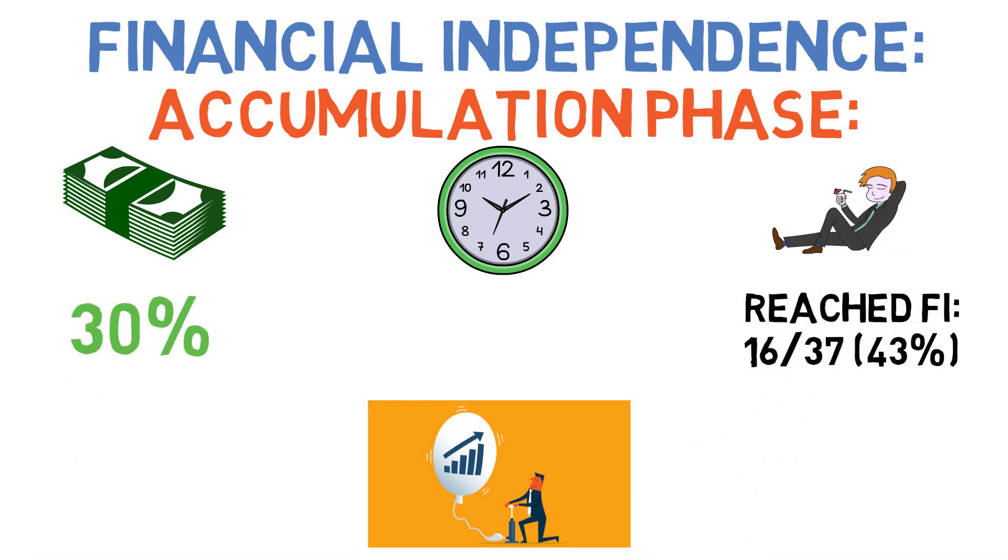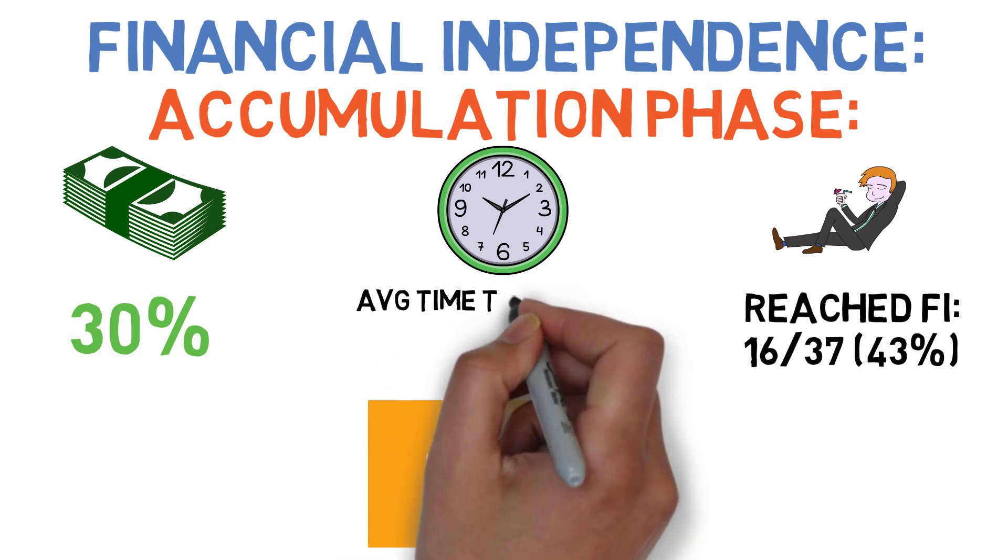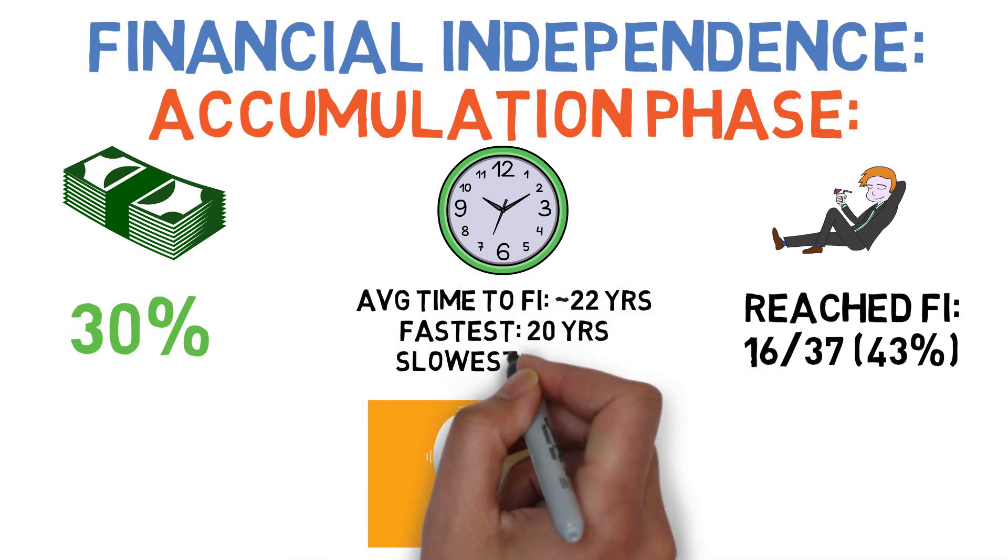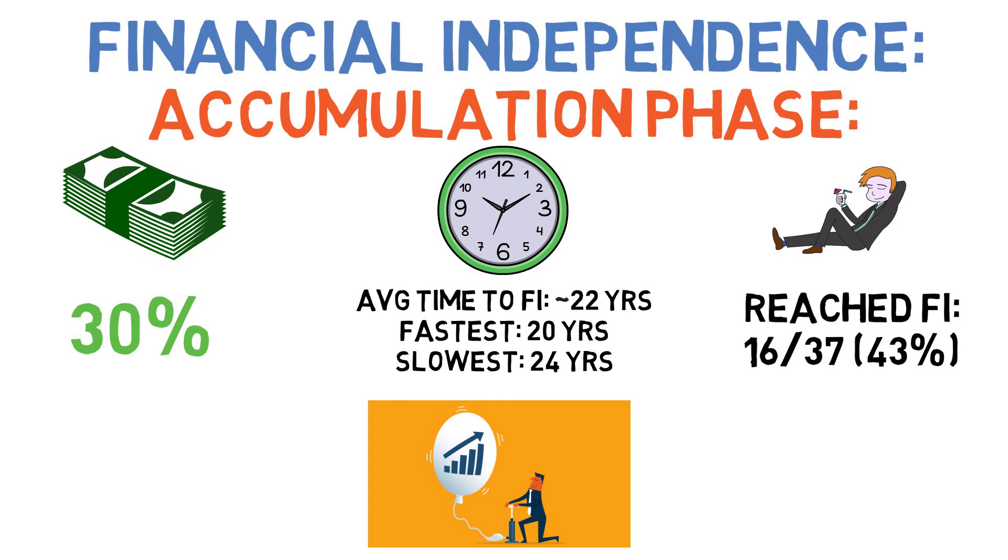On average, it took about 22 years to reach FI, with the fastest and slowest paths taking 20 and 24 years, respectively. With a 50% savings rate, a hypothetical investor would have reached financial independence in 28 of the 37 scenarios. On average, it took about 10 years to reach FI, with the fastest and slowest paths taking 9 and 13 years, respectively.